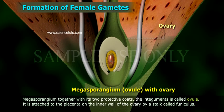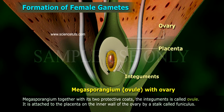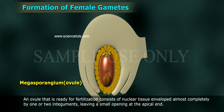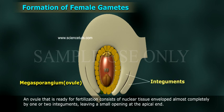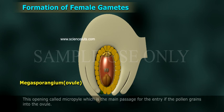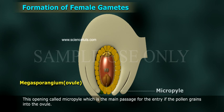The megasporangium together with its two protective coats, the integuments, is called the ovule. It is attached to the placenta on the inner wall of the ovary by a stalk called funiculus. An ovule that is ready for fertilization consists of nucellus tissue enveloped almost completely by one or two integuments, leaving a small opening at the apical end called the micropyle, which is the main passage for the entry of pollen grains into the ovule.